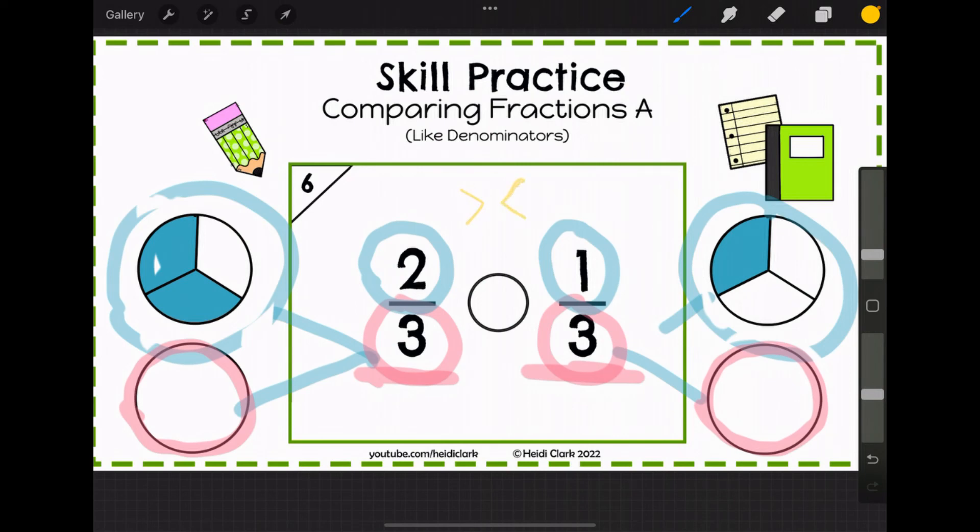So if you think of this as like a mouth, it's going to eat the two thirds, which is the bigger fraction. So when I draw it, I'm going to draw it with its mouth open towards two thirds.